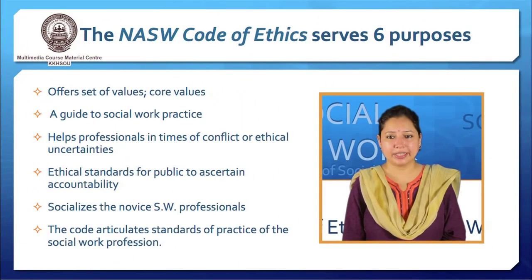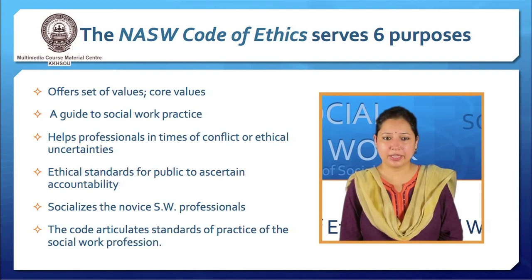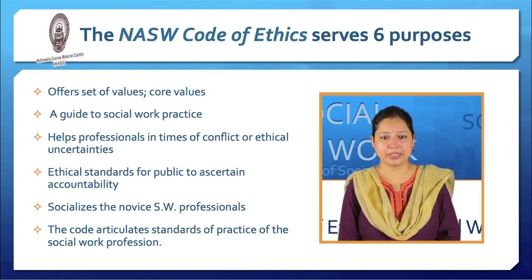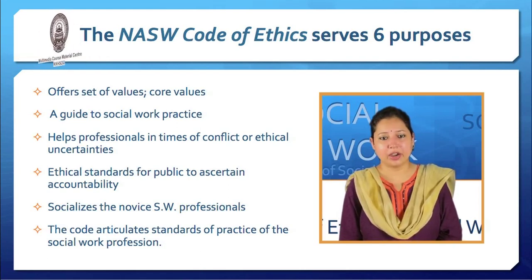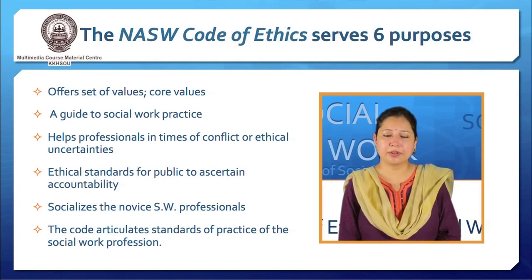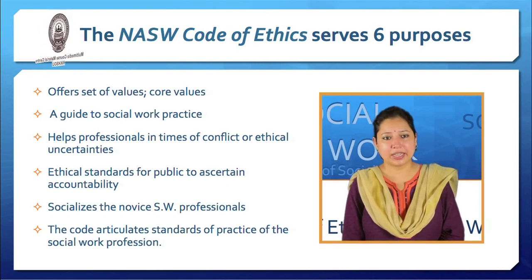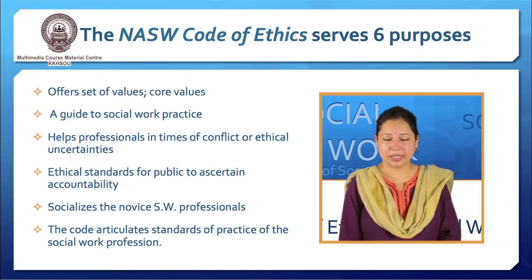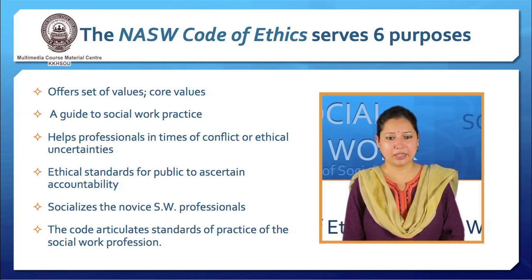The NASW code of ethics serves basically six purposes. Its main purpose is to offer a set of values — the core values of honesty, integrity, and the attitude of service. The NASW code of ethics also serves as a guide to social work practice. It helps professionals in times of uncertainty or ethical conflict. For example, when a social worker is in an ethical dilemma about how to deal with a particular case, these codes of ethics are the main guide in taking steps forward to solve the client's problem.